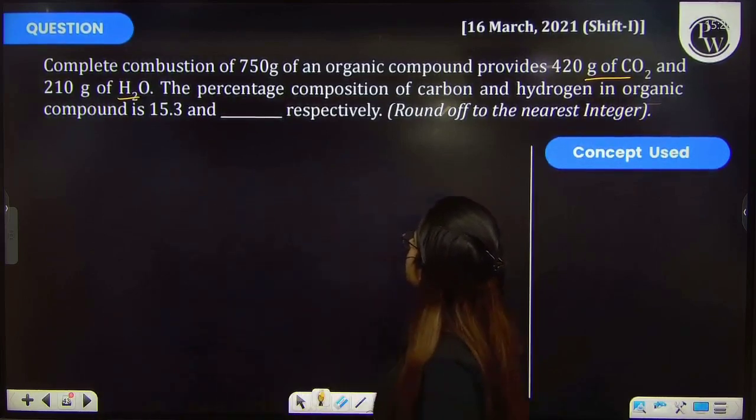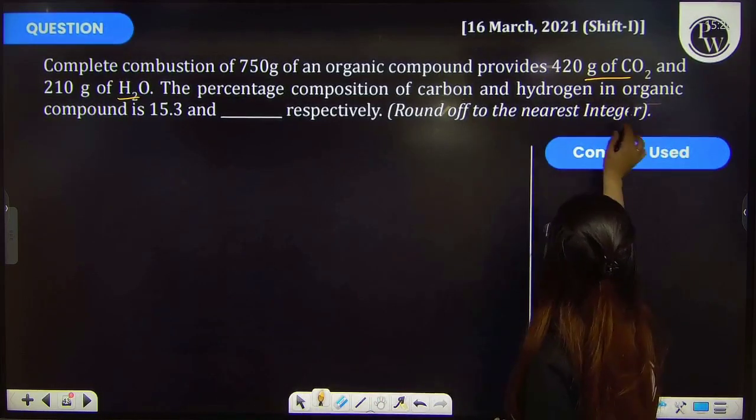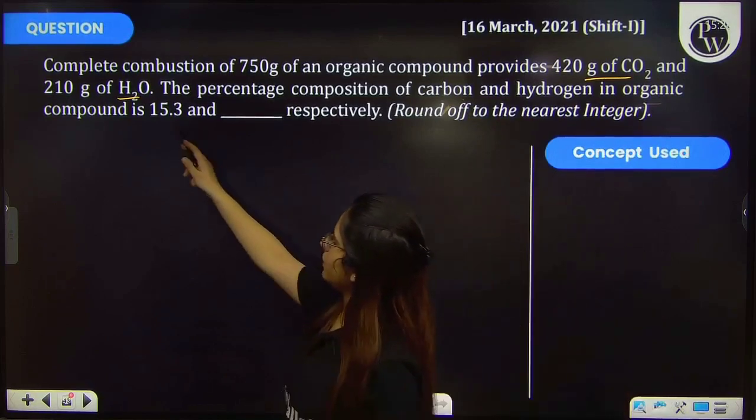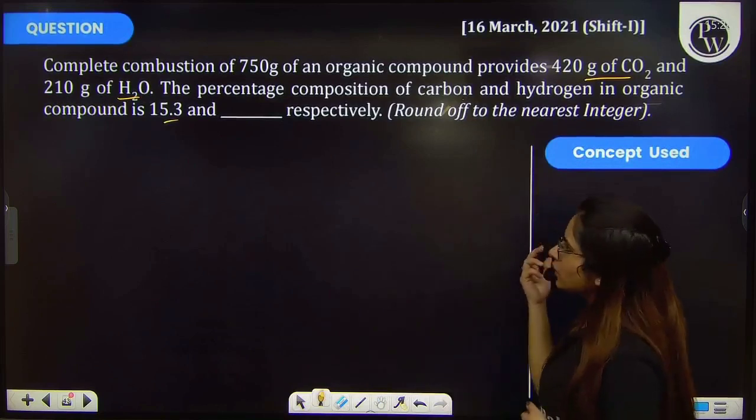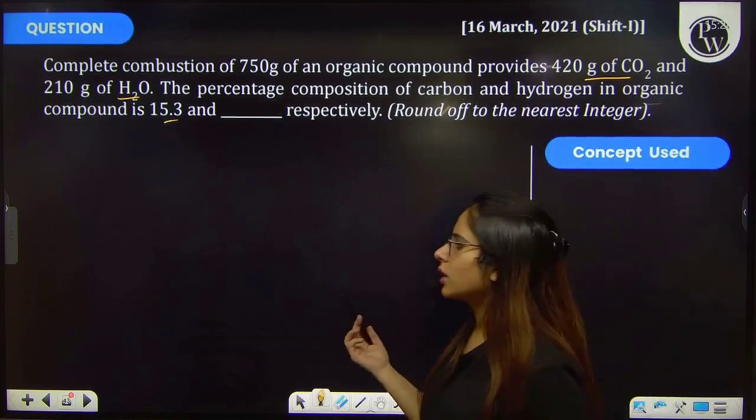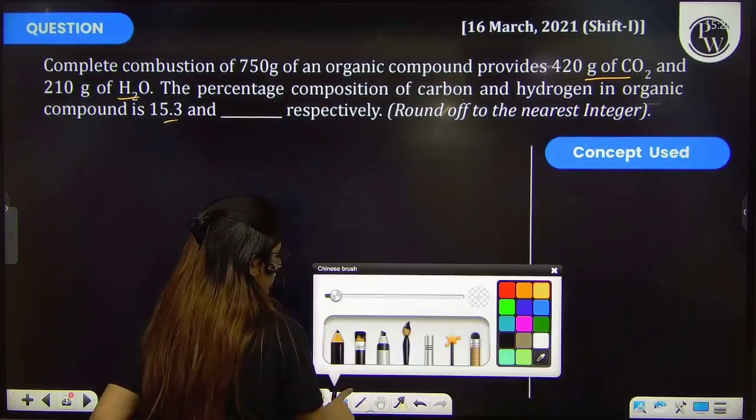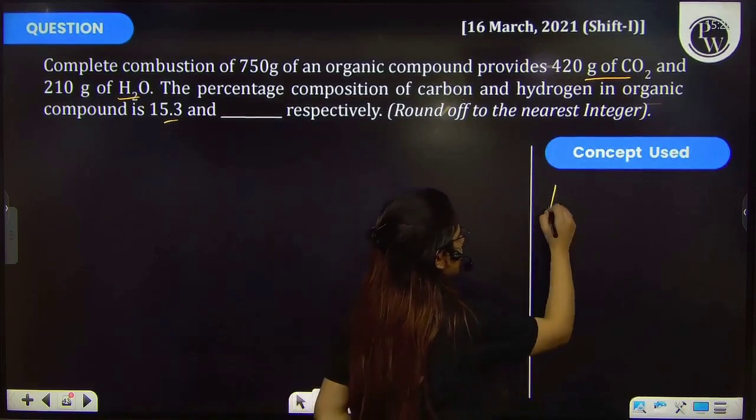The percentage composition of carbon and hydrogen in the organic compound is 15.3 and blank respectively. You have to calculate the percentage of hydrogen present in the organic compound. The key concept here is percentage composition.